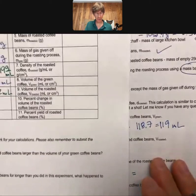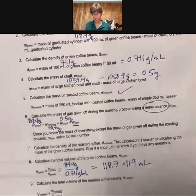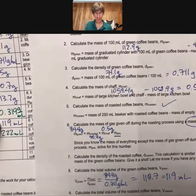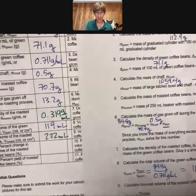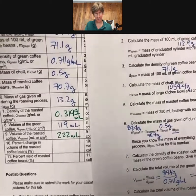There we go. No, it doesn't work. So volume of green is 119. Volume of roasted is 222. Wow, that's a big change, as we will see.